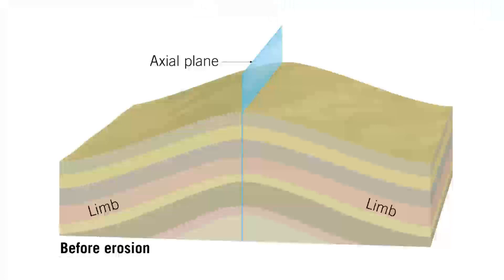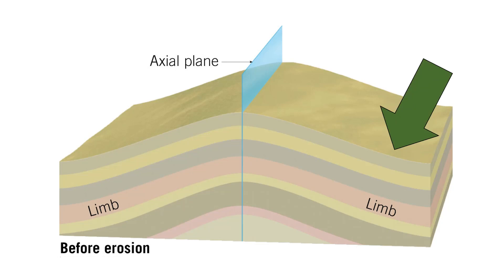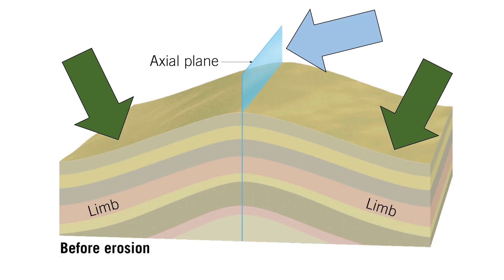Here we have an idealized anticline. Here is the right limb, and here is the left limb. In the very center of this anticline is what we call the axial plane. This is kind of like a hinge that the limbs are attached to, and like a hinge, the limbs can move in relation to it. The angle of each limb can be at a different angle to the axial plane depending on the forces that the rock is experiencing.